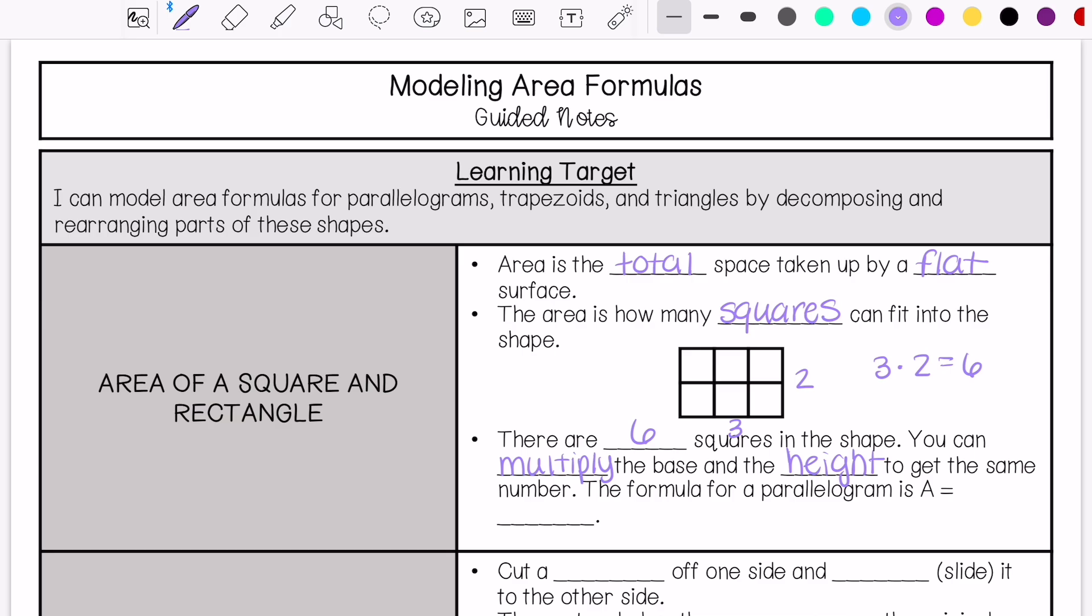The formula for area of a parallelogram, which is a square or rectangle, is area equals base times height.